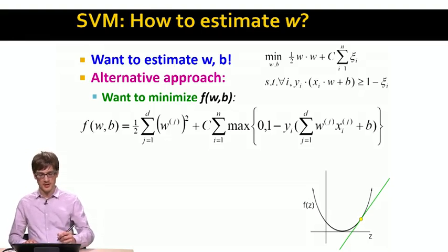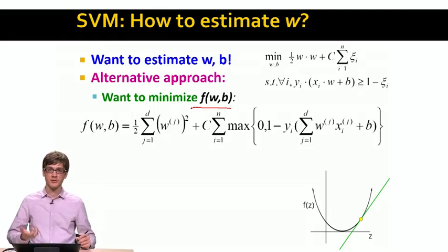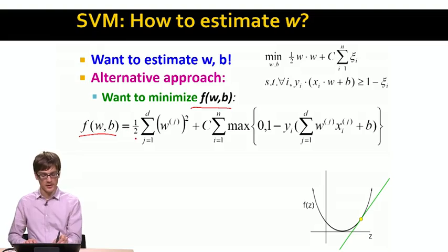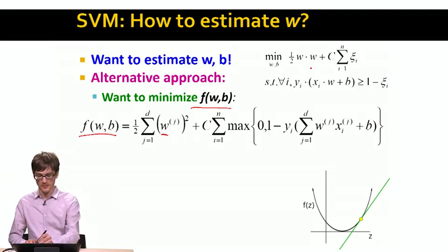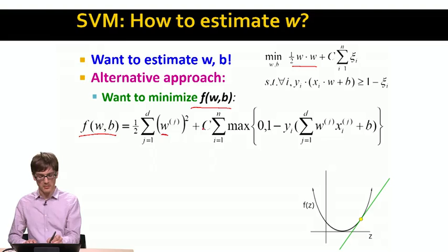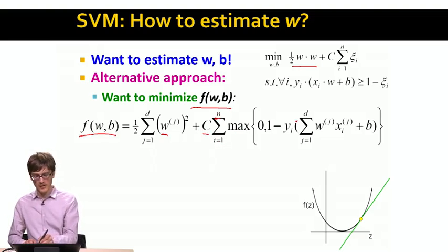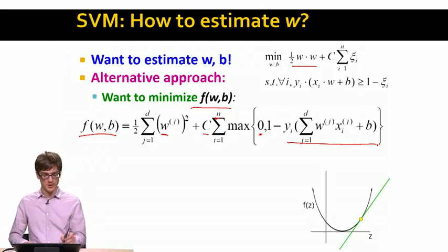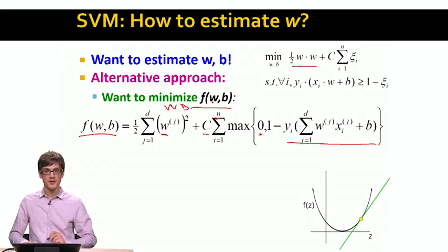Imagine that we want to minimize a function f of b and w — some abstract function with two parameters — such that the function is minimized. The function is simply one-half times the sum over all dimensions of the squares of the values of w. This is the margin maximization part. Then we have the empirical loss part: plus the slack penalty c times the sum over all training examples, where the slack value is zero if we classify correctly, or one minus our distance from the boundary. So we want to find w and b that minimize f.